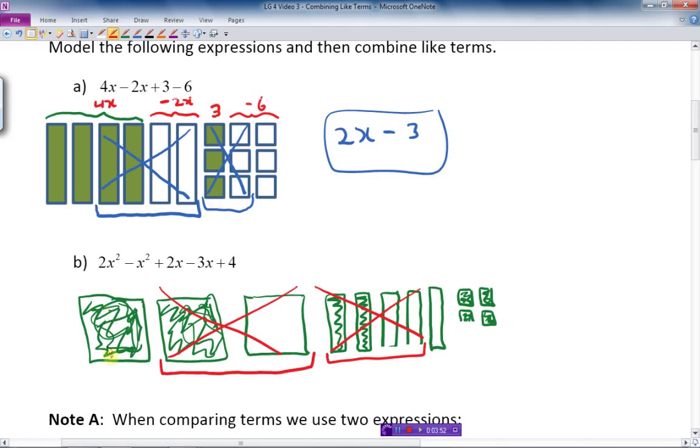And there's nothing else I can cancel out. So what's left here? I have an x squared, positive x squared. I have a minus x, minus 1x. And I have 4. So that's my expression. It's going to be x squared. When I simplify this thing, I get x squared minus x plus 4. And that is the final simplified answer when I combine like terms.